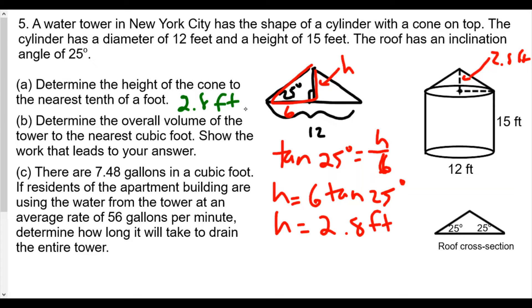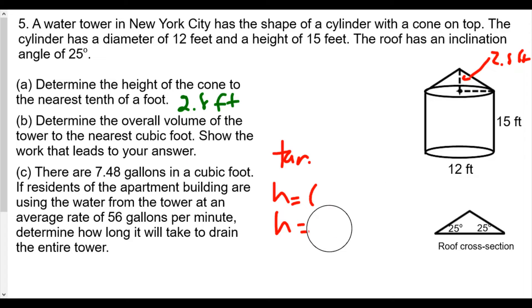We need some space, so hopefully if you need to, you can pause the video and take down notes. Now for part B, I'm going to need the volume. The volume says: determine the overall volume of the tower to the nearest cubic foot. Show the work that leads to your answer. So it's two parts. We have the volume of the cone, which is equal to one-third π r² times height.